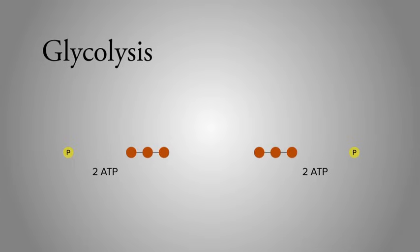During the process of removing the phosphate group from these three-carbon molecules, an electron is stored in a molecule called NADH. When NAD+ takes on an electron, it becomes NADH. In the same way that you put money in the bank so that you can use it later, glycolysis stores energy in the form of electrons inside NADH.